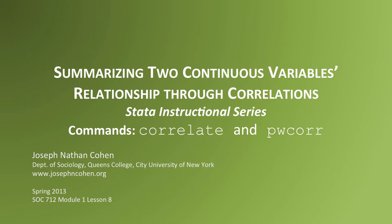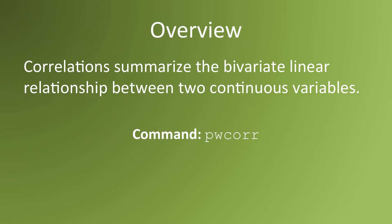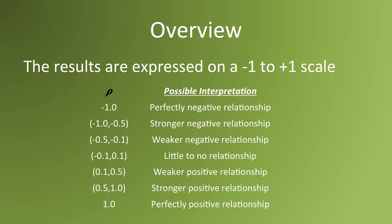In this video, I'll show you how to describe the relationship between two continuous variables using pairwise correlations. Correlations summarize the linear relationship between two continuous variables. You can get correlations by using the command pwcorr for pairwise correlations. Correlations describe the relationship between two continuous variables on a minus one to plus one scale.